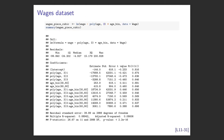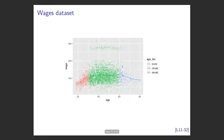It took some work to force R to do piecewise cubics — I used a polynomial with an interaction term with the age bins. The fit shows a cubic in each colored region, but there's a problem: the cubics don't connect smoothly at the boundaries. Just like with piecewise constants, you get jumps between bins.